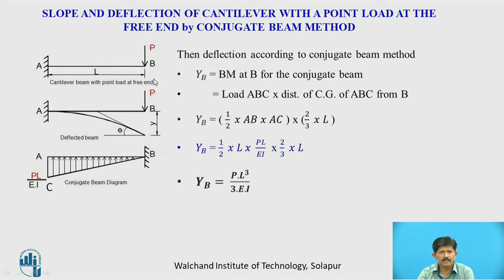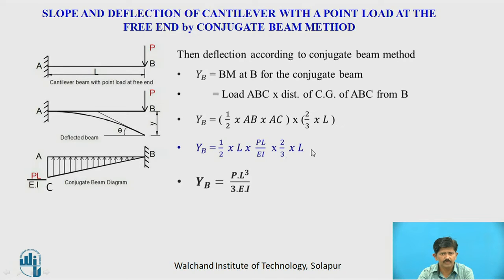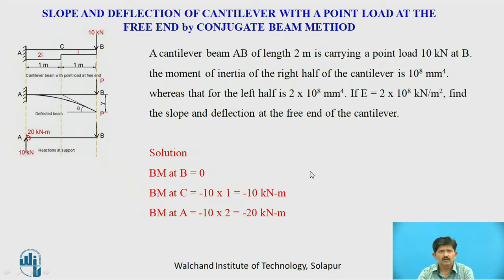To find the deflection at B of the real beam, yB equals the bending moment at B of the conjugate beam. The bending moment equals the load of triangle ABC multiplied by the distance of its centroid from B, which is two-thirds of L. So yB = (1/2) × L × (PL/EI) × (2L/3), which gives yB = PL³/3EI.